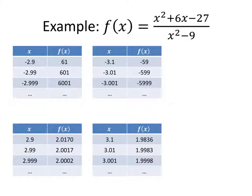Now let's check our other potential asymptote at x equals positive 3. Again, we make a table of values — numbers getting closer to 3 from below and from above. But we're not seeing the same behavior here. Whereas approaching negative 3 caused our y values to blow up toward positive or negative infinity, here our y values are actually getting closer and closer to y equals 2.